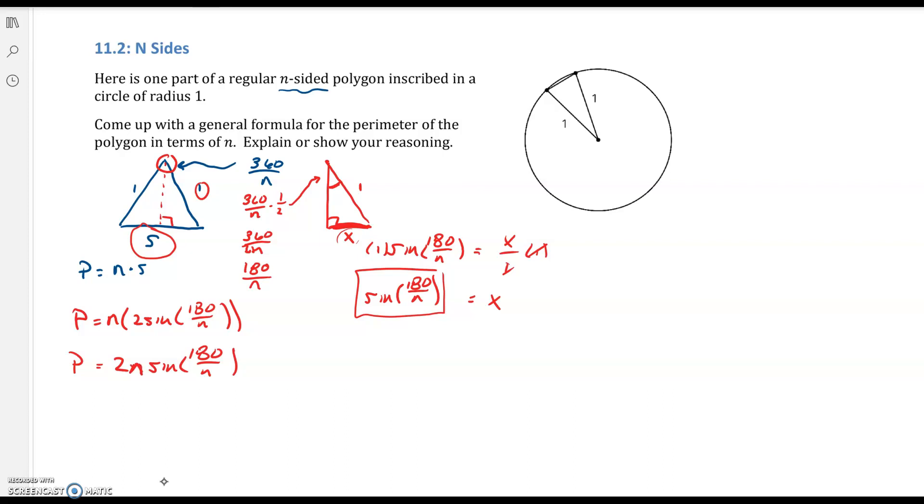Commutative property of multiplication says I can write those in any order. So there is a good general formula for the perimeter of any polygon that is inscribed inside a circle with a radius of 1.